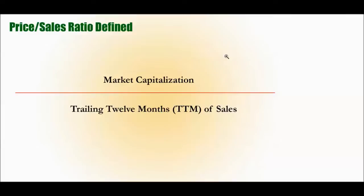Price-sales ratio defined: it's a basically simple calculation. It's market capitalization divided by the trailing 12 months of sales. So you're taking market capitalization — the price of buying up all the common shares, approximately what it costs to buy the entire company — divided by the past year's sales. Essentially, what are you paying for each dollar in sales?